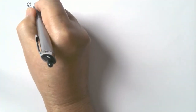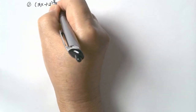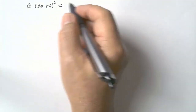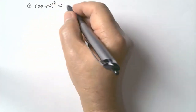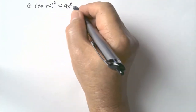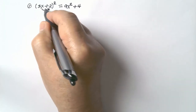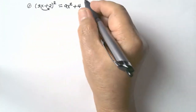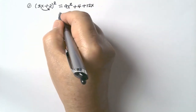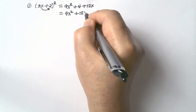Example number one: (3x + 2) squared. Square the first term: 3x times 3x = 9x squared. Square the second term: 2 times 2 = 4. Multiply the first term by the second: 3x times 2 = 6x, times 2 = 12x. Then arrange the terms: 9x squared plus 12x.